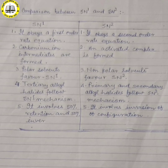Now we will learn comparison between SN1 and SN2. This question is usually asked: differentiate or compare SN1 and SN2. First difference: SN1 obeys a first order rate equation, whereas SN2 obeys a second order rate equation. Second difference: in SN1, carbocation intermediates are formed, whereas in SN2, an activated complex (transition state) is formed.